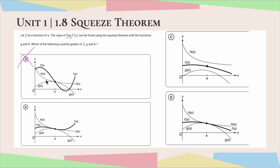For A, this would not apply — if we look at our f function here, it is clearly not being squeezed between g and h, so we can confidently eliminate that one. For B, if you weren't paying close attention to detail, this may look promising. However, f is squeezed over on the left side of a, but on the right side of a it is no longer squeezed — it goes up with g and h being below it, so it's not being squeezed. So B would not be correct.